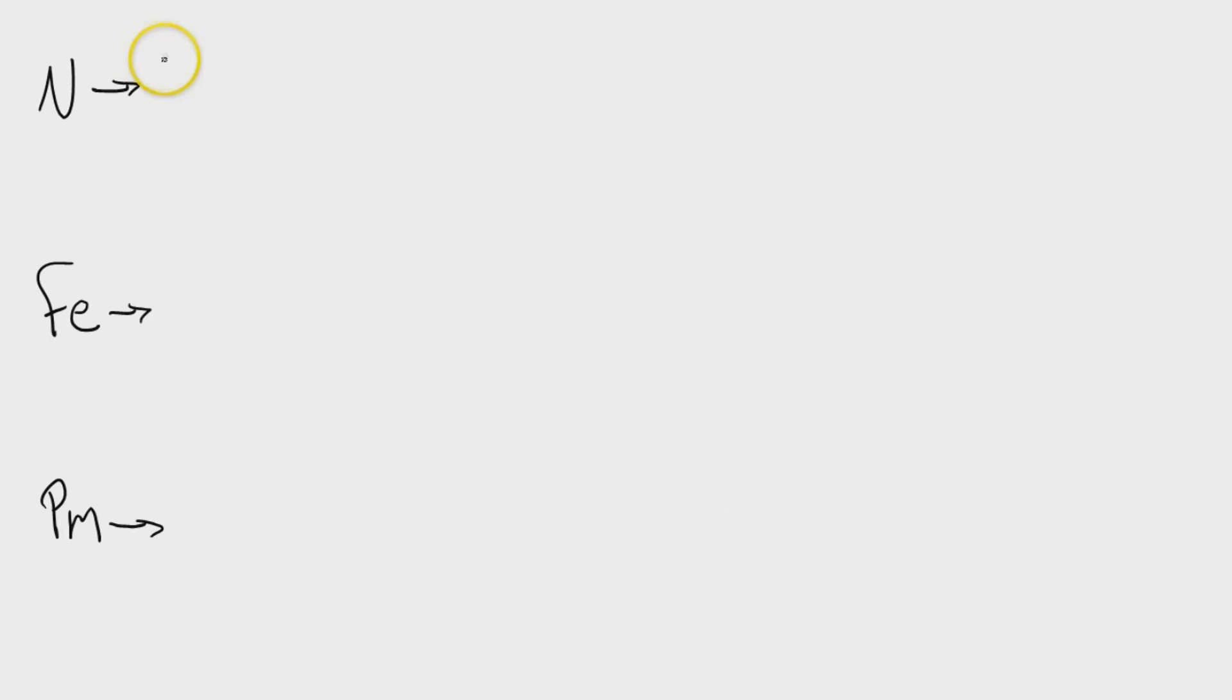So here's how we write that out. We're going to start with 1s2. And electron configuration is always written like this, where the first number is the energy level written as a normal size number, the sublevel is written as a lowercase letter, and then the orbital number is written as a superscript or as an exponent. So we've got 1s2, and then 2s2, and then 2p3. Just like that.